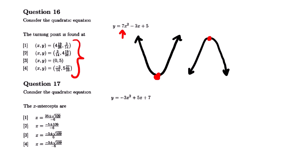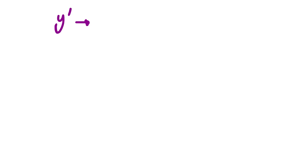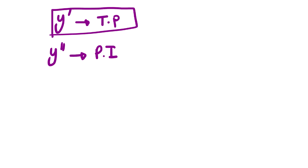There are many ways to find the turning point of a quadratic function, but we are going to use the easiest, which is the derivative. You should know that the first derivative of a quadratic equation will assist us to find the turning point. The second derivative gives the point of inflection. So what we need to do is find the first derivative in order to get the x-coordinate of the turning point.